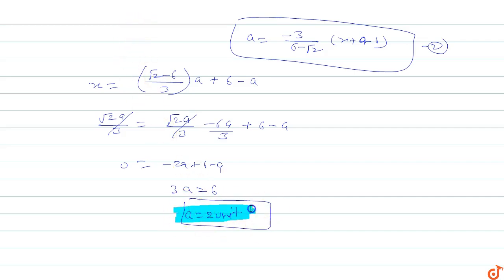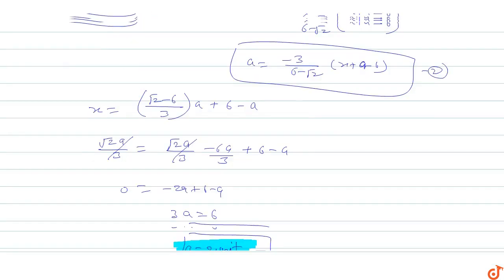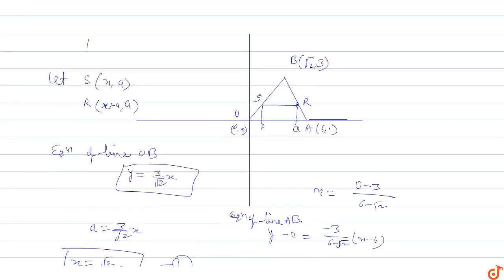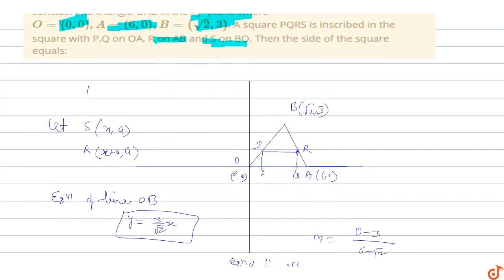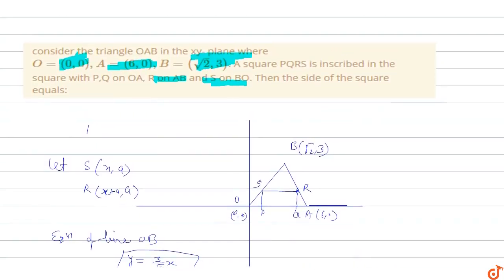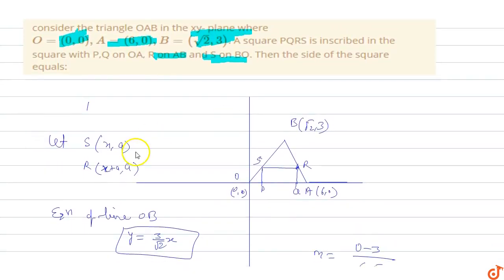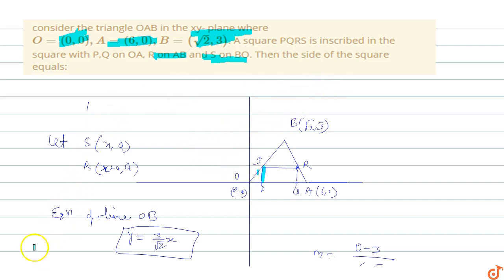So the side length of the square PQRS equals 2 units. The side length a = 2 unit is the answer for this question.